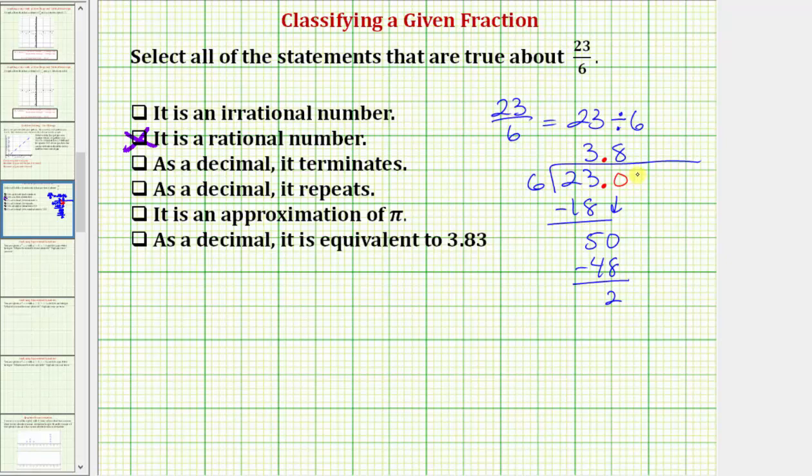Now we add a zero to the hundredths place value, bring it down, and ask how many 6's in 20, which would be 3. 3 times 6 is equal to 18, subtract. The difference is 2. Notice how this is the same difference that we had last time.